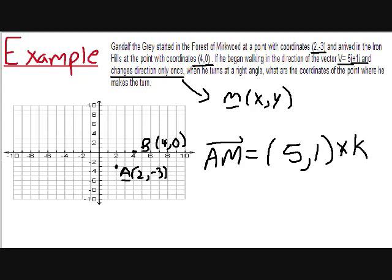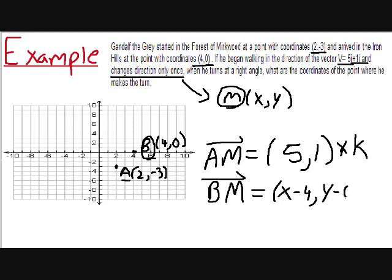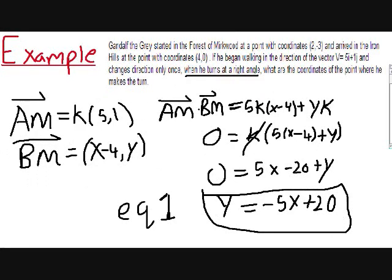From point M to point B, we need one more vector. Vector BM equals x minus 4 and y minus 0, so x minus 4 and y. He makes a right turn at 90 degrees, meaning the dot product between vector AM and BM equals 0. The dot product gives 5k times x minus 4 plus yk equals 0. We factor out k, move y to the other side, and get y equals negative 5x plus 20. That's the first equation required to solve the two unknown variables.